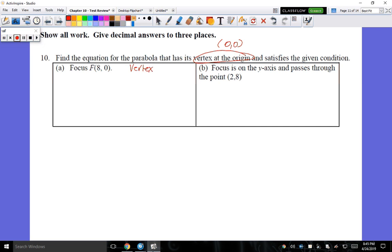So vertex is (0,0), otherwise H and K are 0 and 0, and we have a focus at (8,0). So let's draw a quick sketch. If the vertex is here and the focus is at 8, way over here...